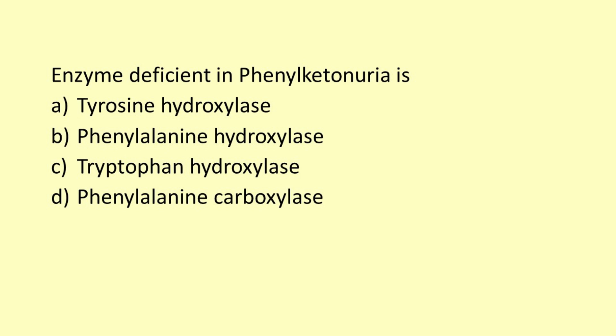Please answer this question: the enzyme deficient in phenylketonuria is — option A: tyrosine hydroxylase, option B: phenylalanine hydroxylase, option C: tryptophan hydroxylase, option D: phenylalanine carboxylase. Thank you very much.